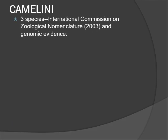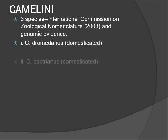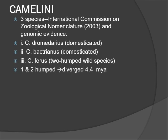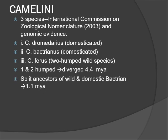Within the subfamily Camelini, three species are recognized today based on the International Commission on Zoological Nomenclature and genomic evidence: Camelus dromedarius which is domesticated, Camelus bactrianus also domesticated, and Camelus ferus, the two-humped wild species. One and two-humped camels diverged 4.4 million years ago. The split between the ancestors of wild and domestic Bactrian camels is more recent and was estimated at 1.1 million years ago.